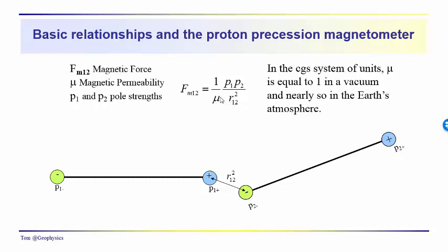Now in CGS units, one of the things that makes the use of the CGS units attractive is that the magnetic permeability is equal to one in a vacuum, and nearly so in the Earth's atmosphere. That simplifies this formula so that we have the magnetic force between these two poles as being equal to the product of the two pole strengths divided by the square of the distance between the two poles. So this is a form that we will use and we will be dealing primarily with CGS units.